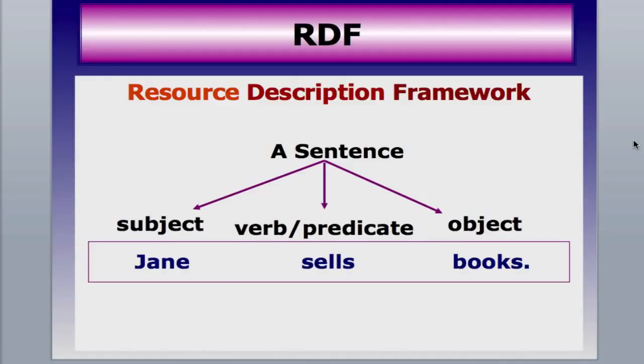Here's how we can teach a computer to remember things in relationship to each other. Using the RDF, or Resource Description Framework, we can take any object — such as a person named Jane — and connect this object to another object, like books. The connection is an action, in this case selling. So the RDF triplet 'Jane sells books' connects Jane and books together in a specific relationship that a computer can remember and work with as data. In a few slides, I'll show you how this is done using XML markup language.